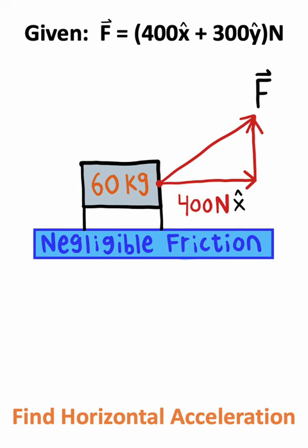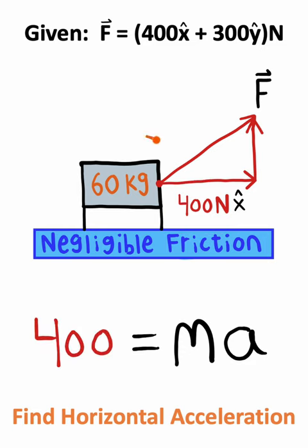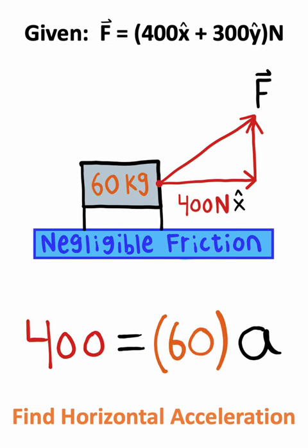Now Newton's second law tells us that force is equal to mass times acceleration. Well the horizontal force is 400 Newtons, the mass is given to us as 60 kilograms, and all we have to do now is solve for the horizontal acceleration.